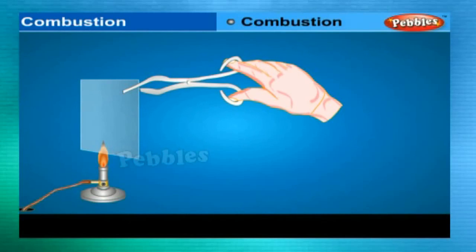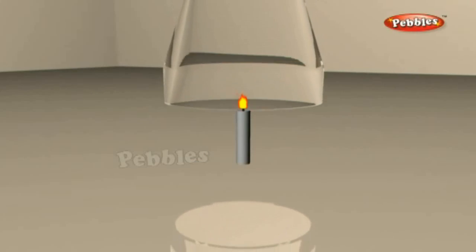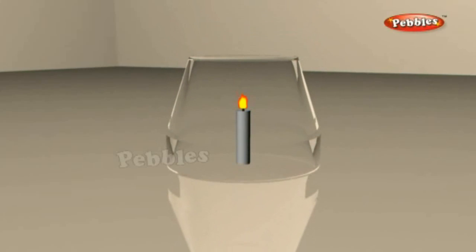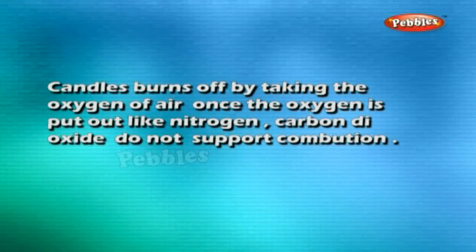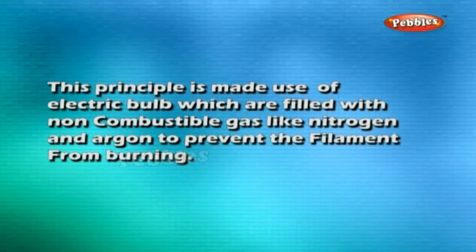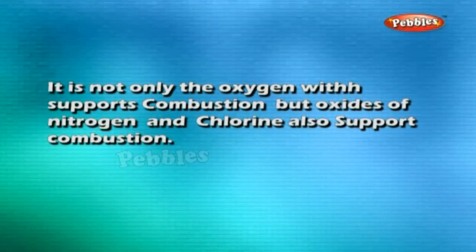Ignition Temperature: A substance catches fire only when it reaches its ignition temperature. Substances with low ignition temperatures are called inflammable materials. Cooking gas, petrol, and white phosphorus have low ignition temperatures. The ignition temperature of a material is defined as the lowest temperature at which it catches fire. Make two paper cups by folding a sheet of paper and pour about 50 ml of water in one of them. Heat both cups — if you continue heating, we can even boil water in the paper cup, because in the presence of water, the ignition temperature of paper is not reached.